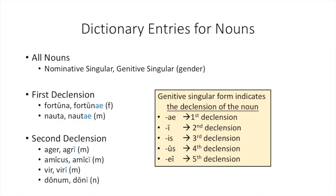Just like all your other nouns, the dictionary entries for our second declension neuter nouns will have our nominative singular form, our genitive singular form, and the gender. First declension nouns have that A-E in the genitive singular, whether they're feminine or masculine. Second declension nouns have an I in the genitive singular ending, whether they are masculine or neuter. The A-E tells us it's first declension, and an I tells us it's second declension. The gender we have to learn from our dictionary entry and just memorize it, because that's never going to change for our noun.